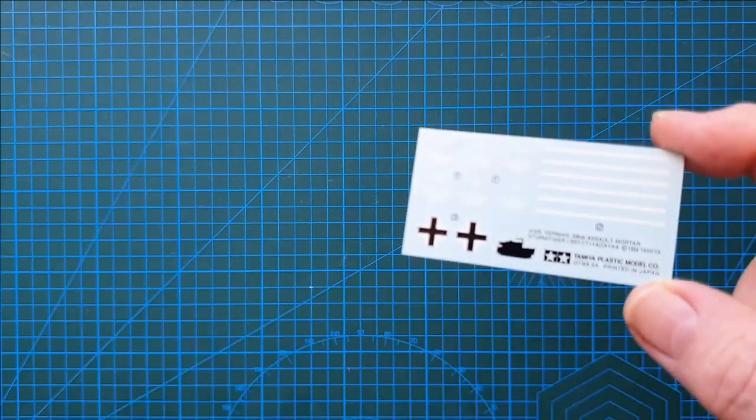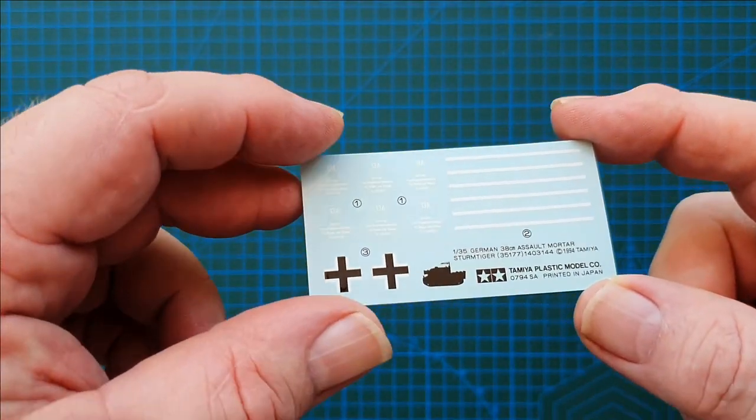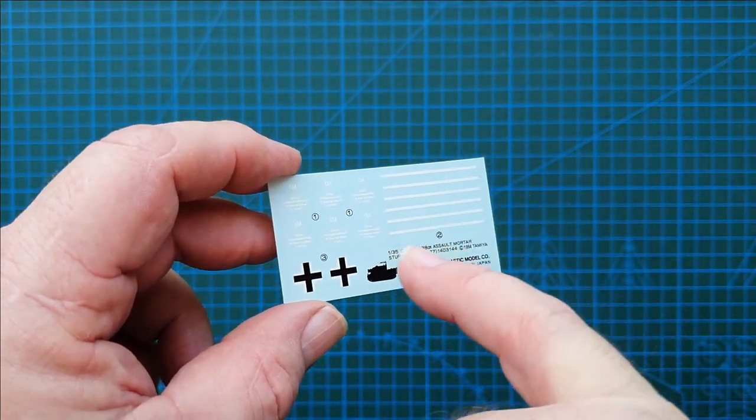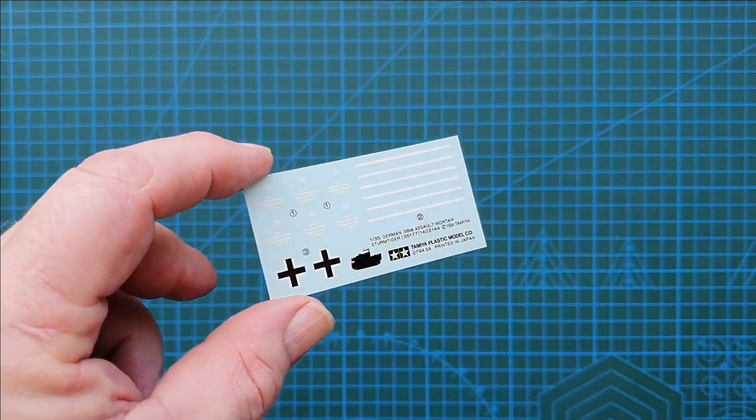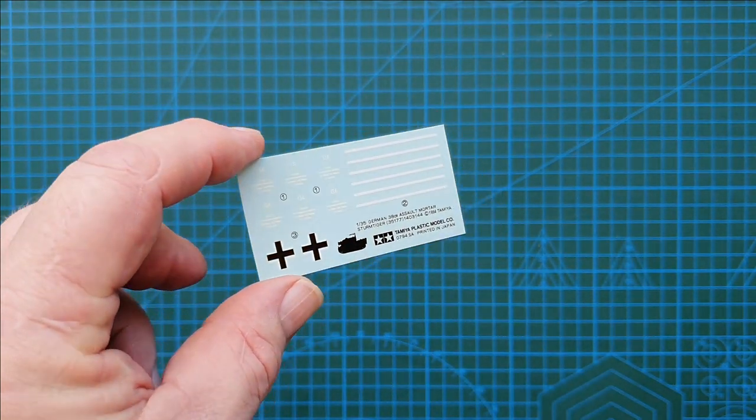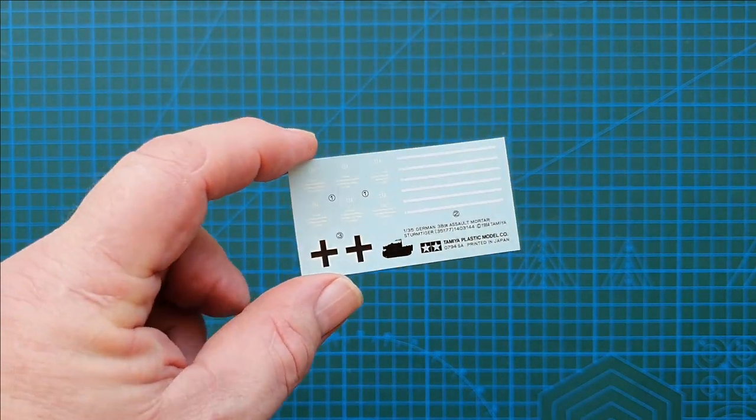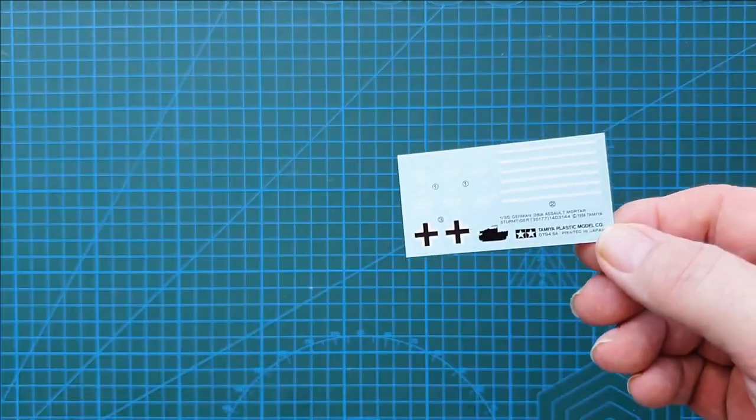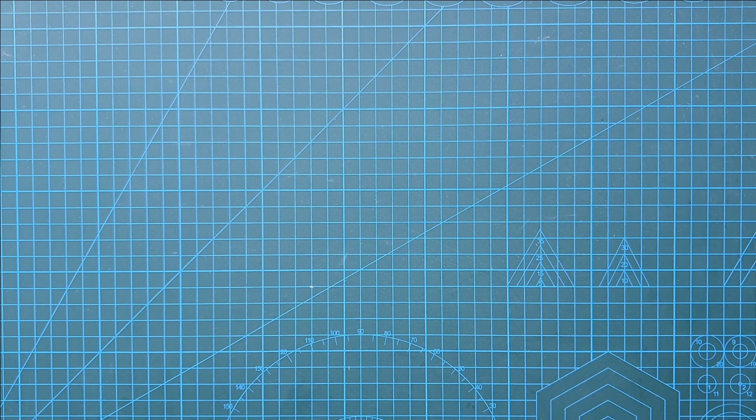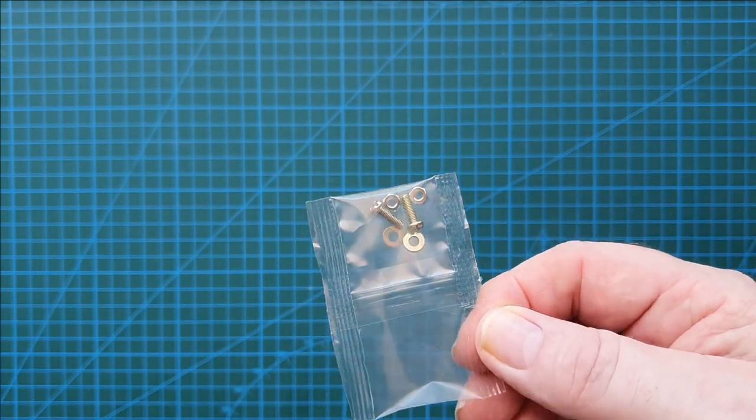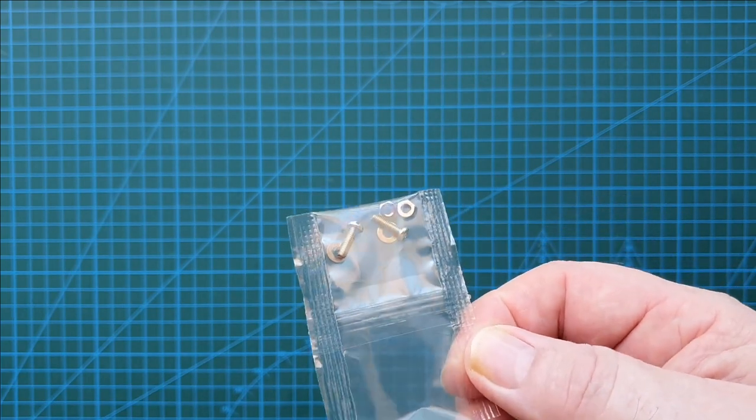Let's have a look at the decals. Very basic decals - two crosses, these six here for the rockets. There are no other markings for the actual vehicle itself. No unit markings, no number, nothing. So if you're going to build this, definitely use internet references for markings of Sturmtiger in the field. Fairly straightforward, fairly easy. The other thing I'll show you is the bolts and screws for the gun mantlet to operate.